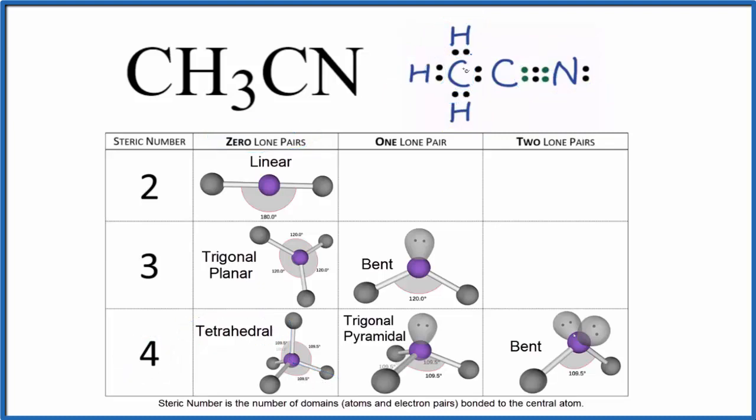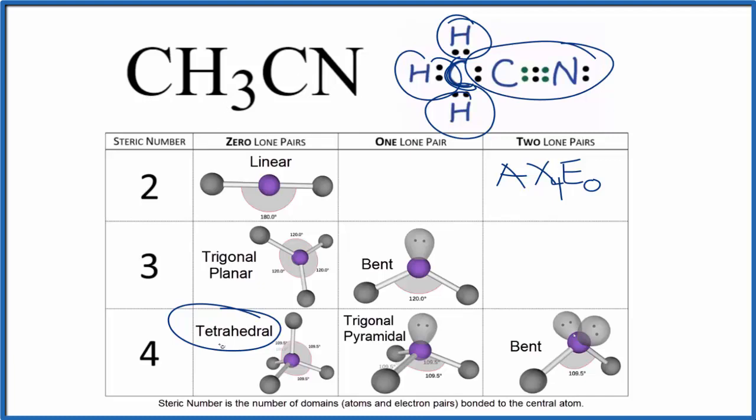If we use the AXE notation, A is the carbon we're talking about right here. X, the number of things bonded to it: one, two, three, four. E, number of lone pairs - we said there aren't any. If you look up AX4, you'll find that it's tetrahedral. The molecular geometry for CH3CN is tetrahedral.